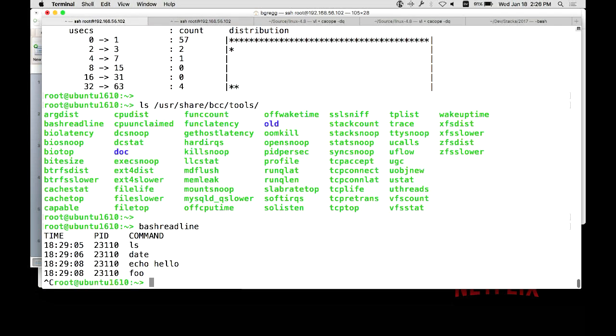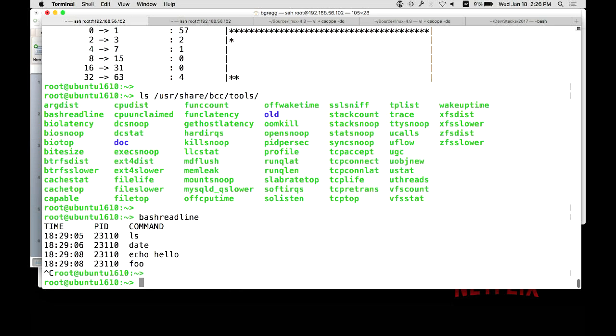And that's instrumenting the bash binary system-wide and looking at commands people are typing into bash, into all the different sessions. Even if the command never succeeded, if I typed 'foo'. That's just an example that we can go into user space with these tools as well, which means at Netflix, we have a lot of Java, and we have a little bit of Node.js and a little bit of other things. There's all sorts of interesting things we can instrument in their user-level libraries and runtimes.